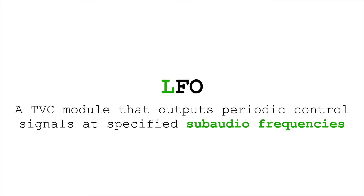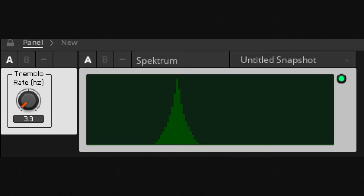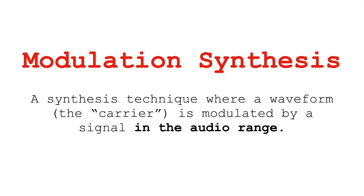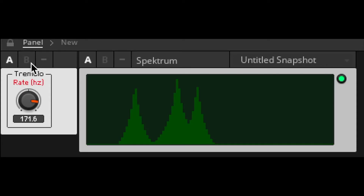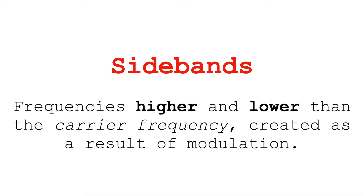Usually when we're using LFOs — low-frequency oscillators — they're sub-audio. These create effects like vibrato and tremolo. But in modulation synthesis, we've moved the frequency of the modulation into the audible range, and so we end up creating new frequencies. These new frequencies are called sidebands.